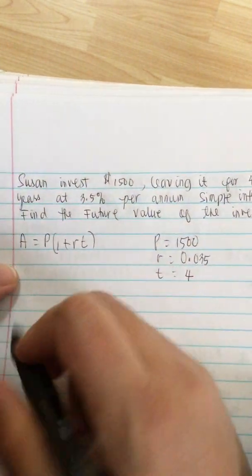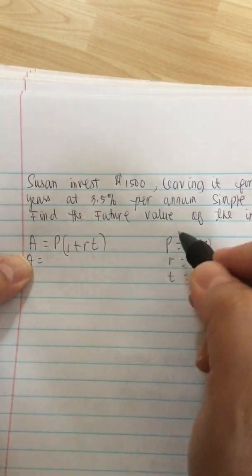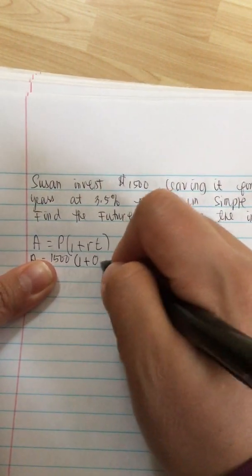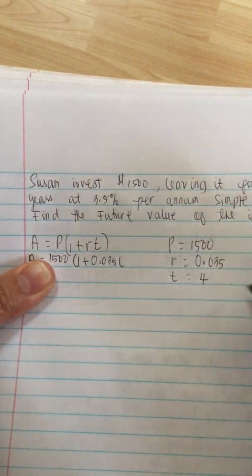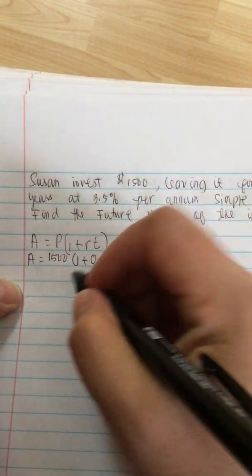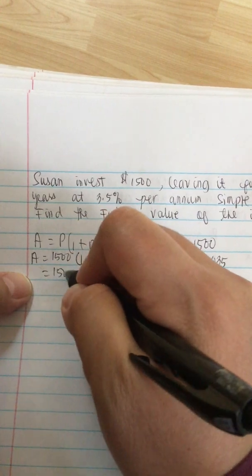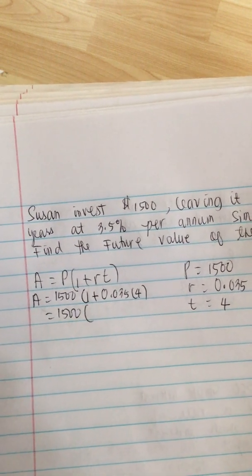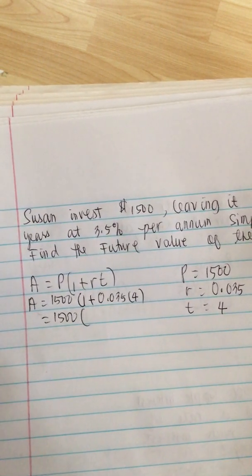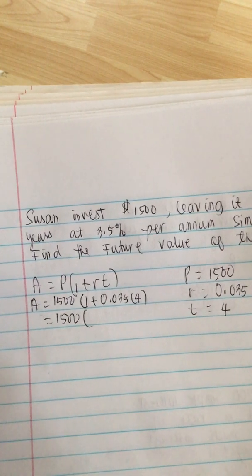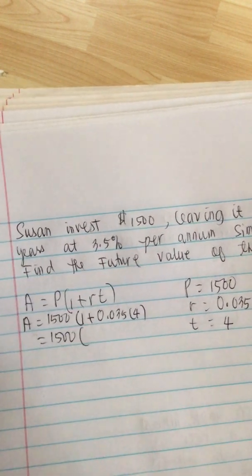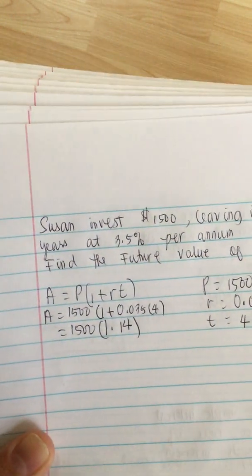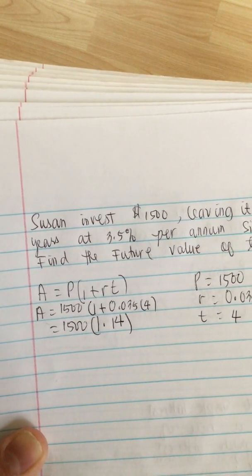So now we plug it in. We multiply 0.035 times 4 plus 1, which equals 1.14, and then we multiply it by 1,500.